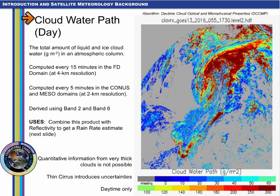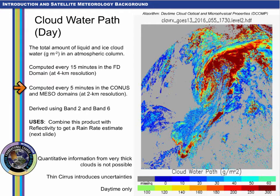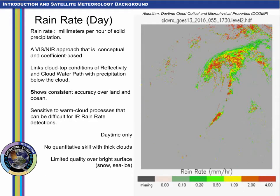Cloud water path is not a GOES-R baseline product, but it is computed along with cloud optical depth and particle size, and you can view it online. This is a daytime-only reflectance-based product derived from the visible channel band 2 at 0.64 microns and the cloud particle size channel band 6 at 2.25 microns. It combines both the liquid water path and ice water path parameters, and is computed every 15 minutes in the full disk domain at 4-kilometer resolution, and every 5 minutes in CONUS and meso domains at 2-kilometer resolution, under the assumption of adiabatic vertical conditions within a cloud. When combined with measurements of reflectivity, you can estimate rain rate.